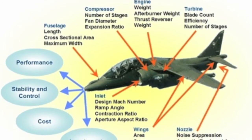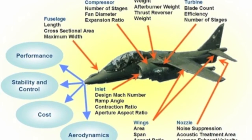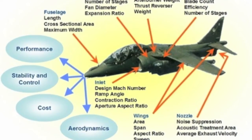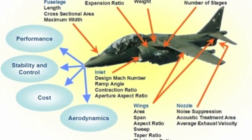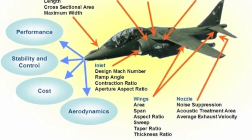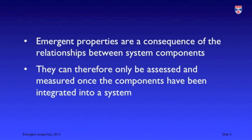All systems have emergent properties. Taking an aircraft as an example, you can see some emergent properties that only appear when the aircraft is assembled. These emergent properties arise because of the relationships between the components in the system, so we can only measure and assess them once the components have been integrated to create the system.